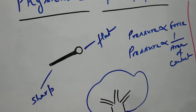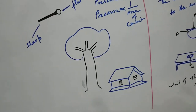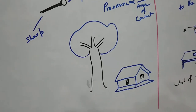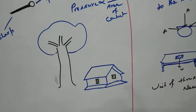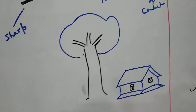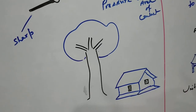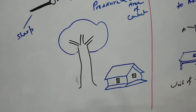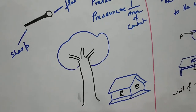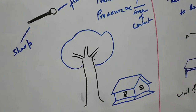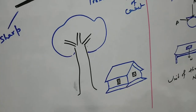In the same way, in the case of trees, the stem at the base becomes larger than at the upper side — the base of a tree is wider than its top. Because the base is wider, the area of contact with the ground is more, and that's why it will exert less pressure. The more the area of contact, the less pressure will be exerted.